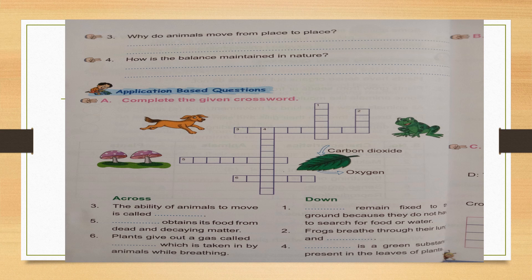Sixth one across: plants give out a gas called dash, which is taken in by animals while breathing. During food making, what gas do plants produce that animals use for breathing? Write in the 6 boxes provided.